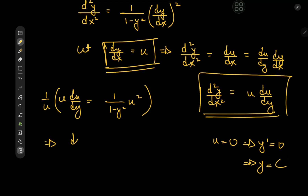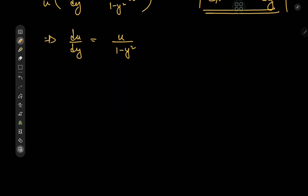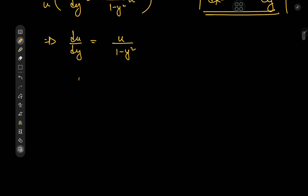So we finally have du/dy equal to u divided by (1 minus y squared), and we did a pretty good job because we transformed our second order non-linear differential equation into a first order differential equation that is in fact separable. Separating the variables gives us du/u equal to dy divided by (1 minus y squared), and integrating yields log u on the left.